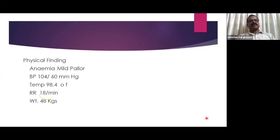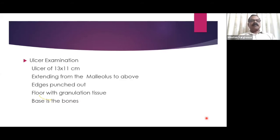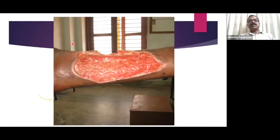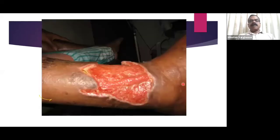Physical findings: mild anemia with pallor, weight only 48 kg. Ulcer examination: very large ulcer, 13 cm × 11 cm, extending from the malleolus upward. Edges were punched out, floor with granulation tissue, base reaching bone. The tibial artery was visible and pulsating within the wound, indicating the extreme depth of the ulcer.